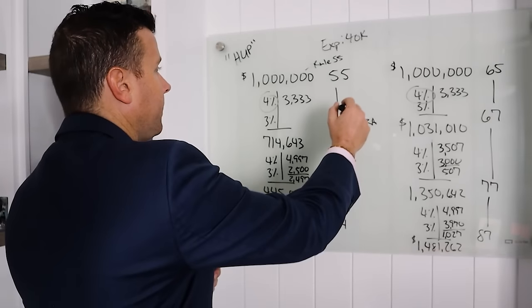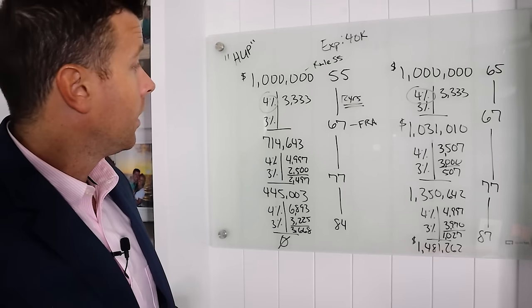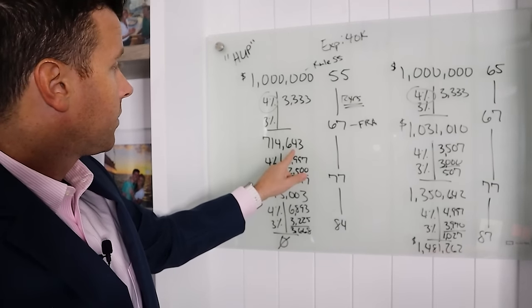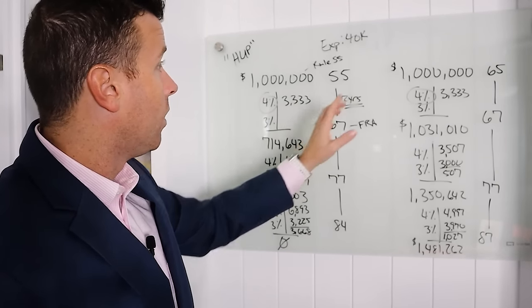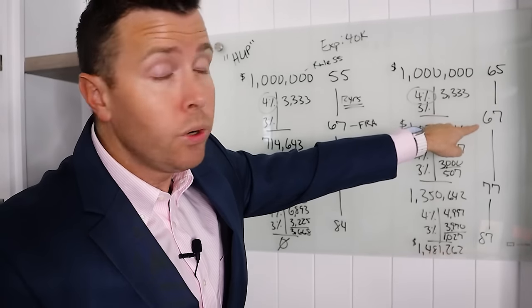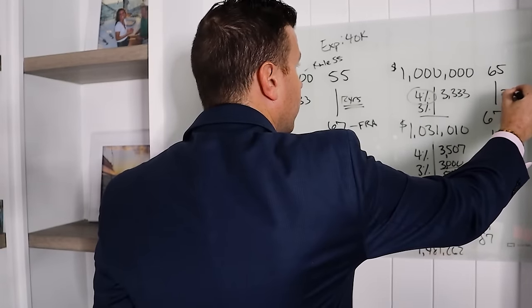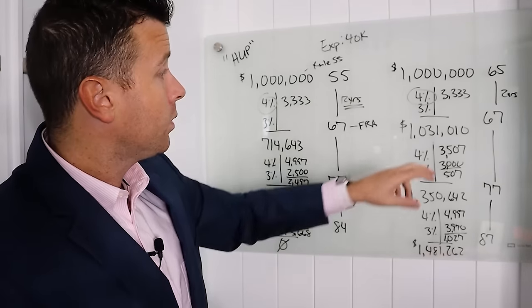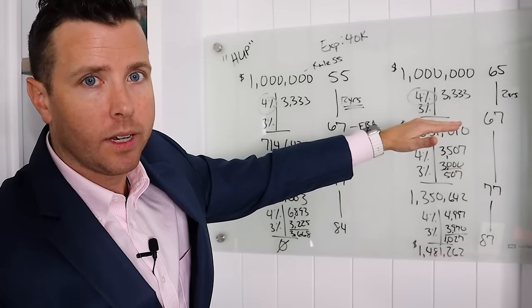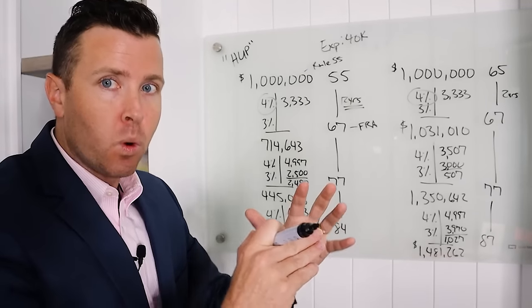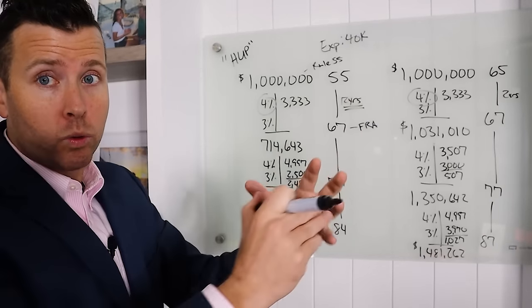Now 55 to 67, that's 12 years of income. So we got a million dollars. We're taking out $3,333 a month. At age 67, we have $714,643. You see that? A million to $714. Now over here, we're 65. We only got two years till we get to full retirement age. So from 65 to 67, that's two years. We go from a million, we actually go to a million 31. We actually grow our money $31,000, less time to pull out of our investments. This is more time. And the more time you have to pull out money from your investments, the less time you have for growth, because we're pulling that out.